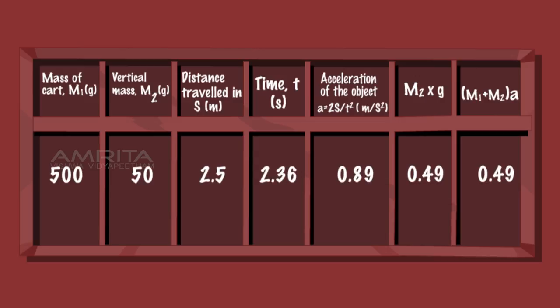Calculate the acceleration of the object. Calculate m2g and m1 plus m2 times a. It is found to be the same. Hence Newton's Second Law is verified.